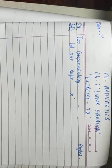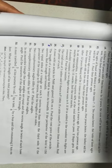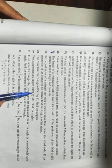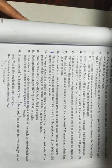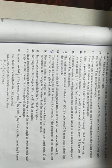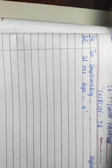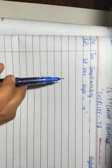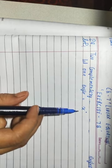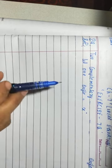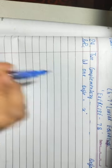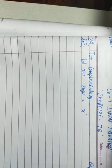Question number 29: two complementary angles differ by 8 degrees. Find the angles. You are already aware that complementary angles are those whose sum is 90 degrees. Let us consider one angle as x. Then the complement of the given angle will be x plus 8, according to this statement.